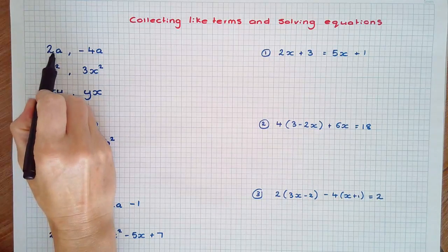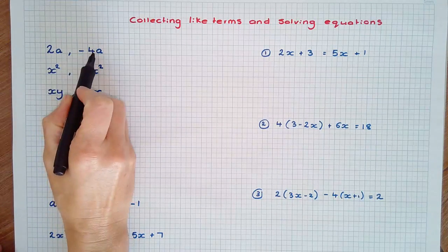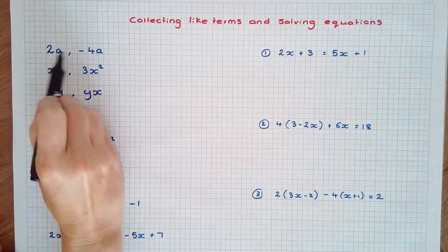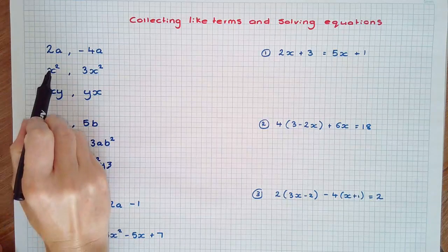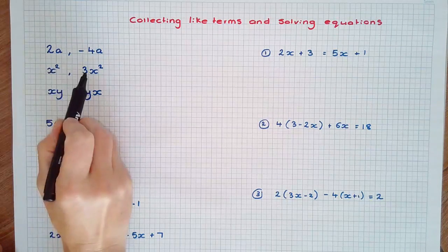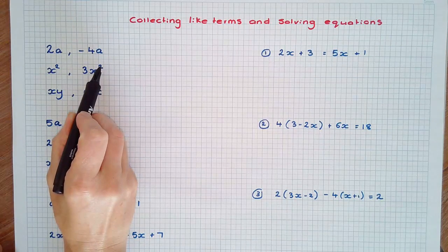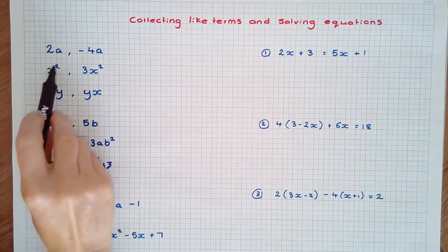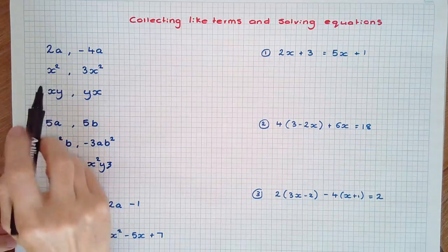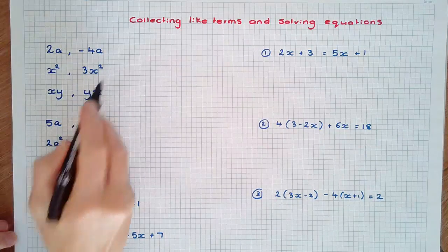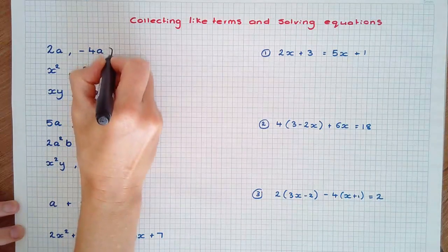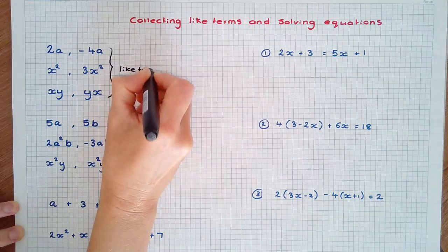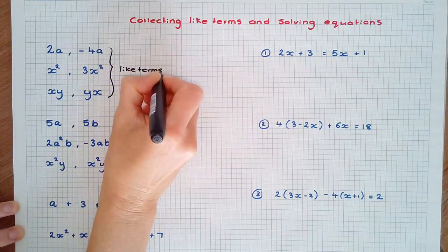For example, 2a and negative 4a are like terms because they both contain the pronumeral a. x-squared and 3x-squared are like terms because they both contain the pronumeral and exponent x-squared. And xy and yx are also considered like terms because the order of the pronumerals doesn't matter.